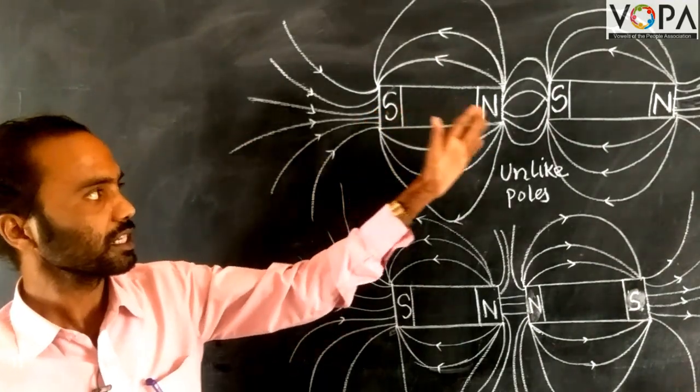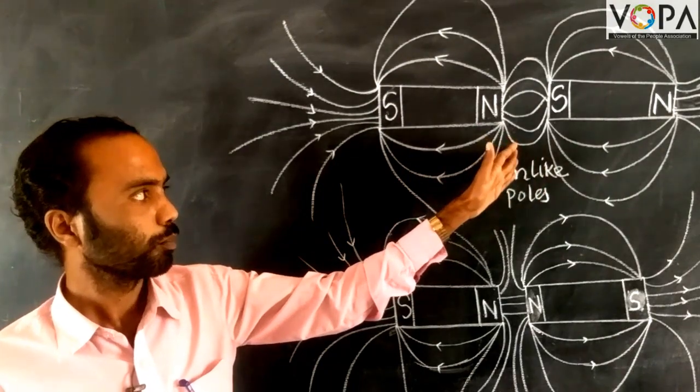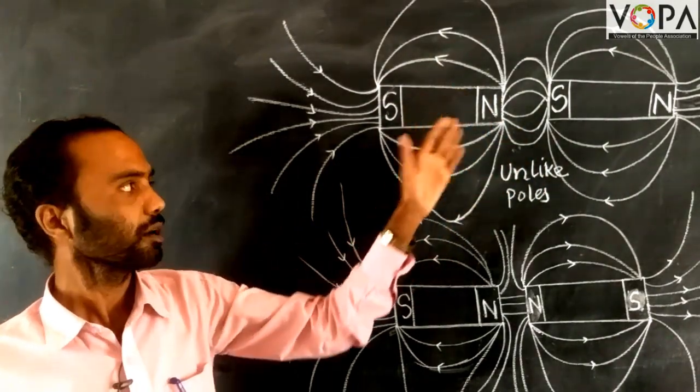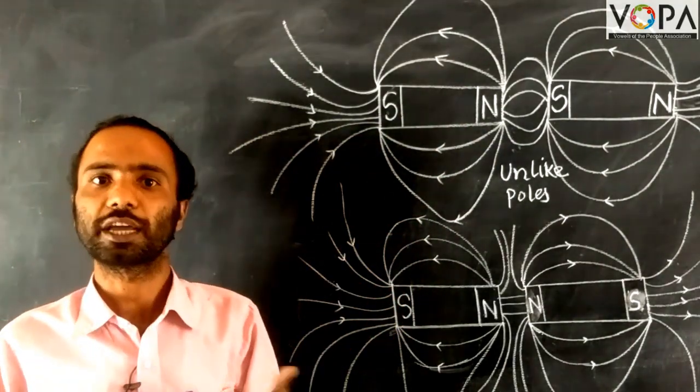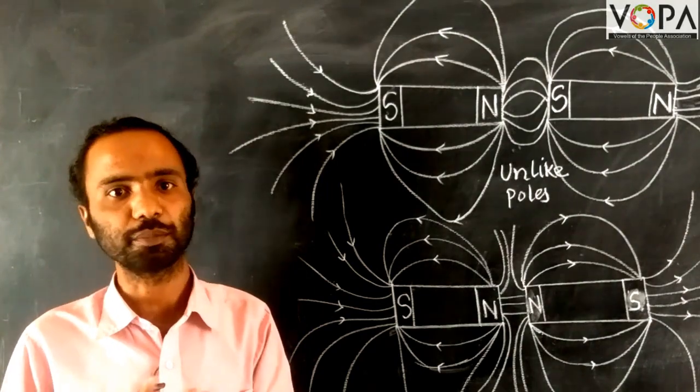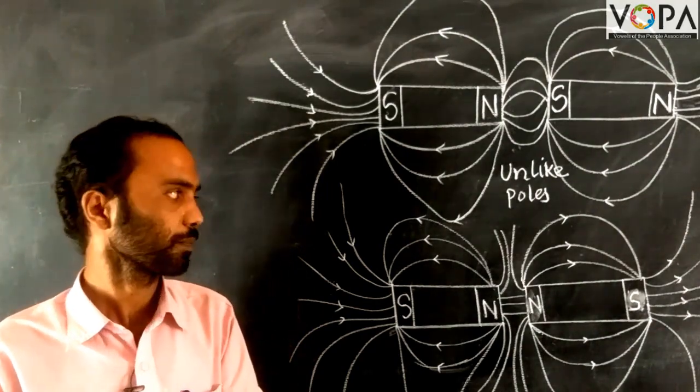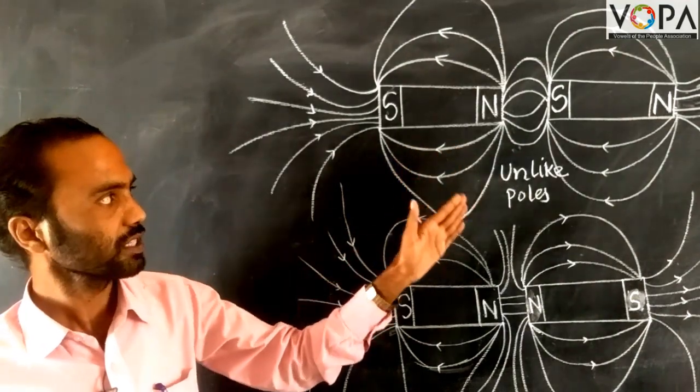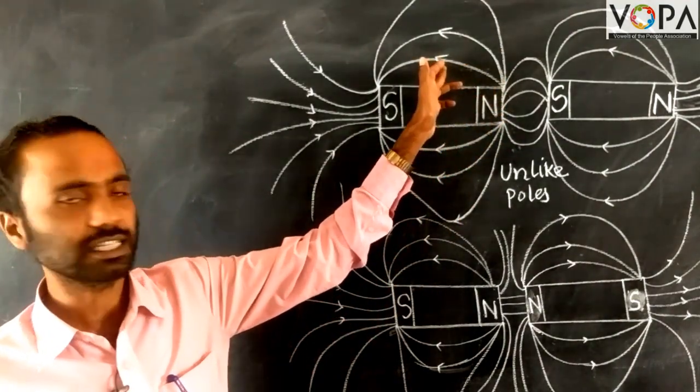These lines of force of a magnet are imaginary lines. Michael Faraday used these lines to explain the properties of attraction and repulsion between magnetic forces. Now these lines of force are always in the form of a stretched spring.